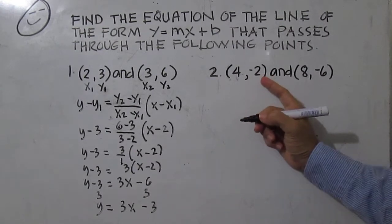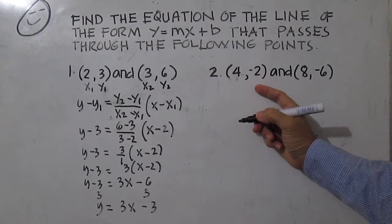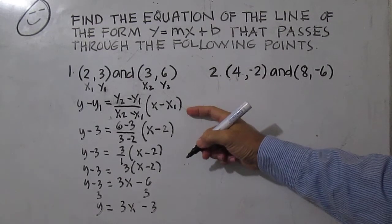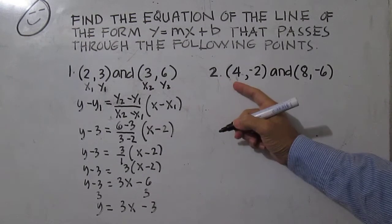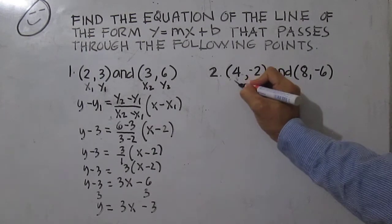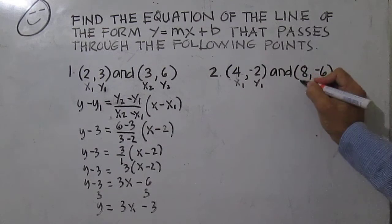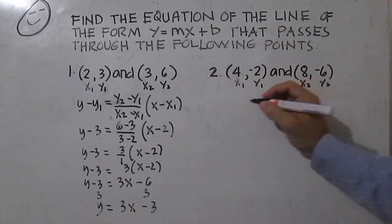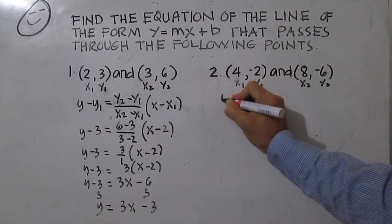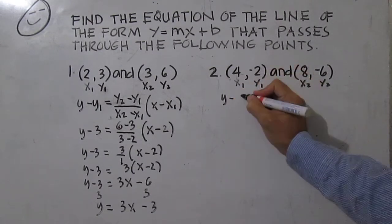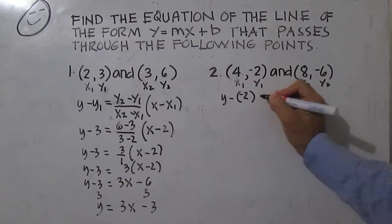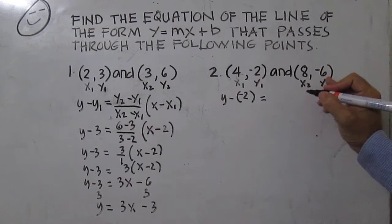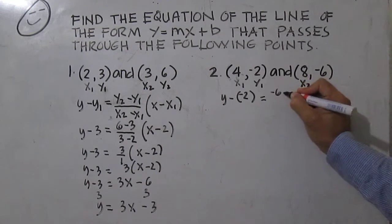For number two, the same approach — you're going to make use of the two-point form. Label the coordinates as x sub one, y sub one, x sub two, y sub two, then substitute: y minus y sub one is negative two.